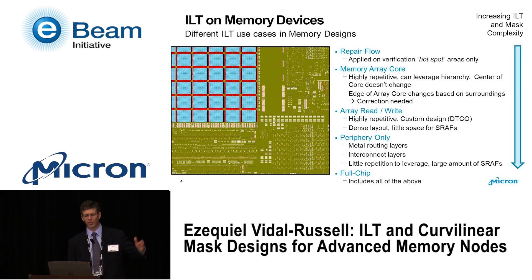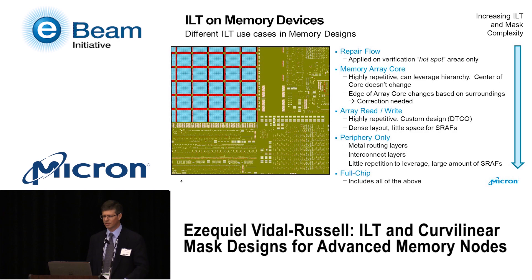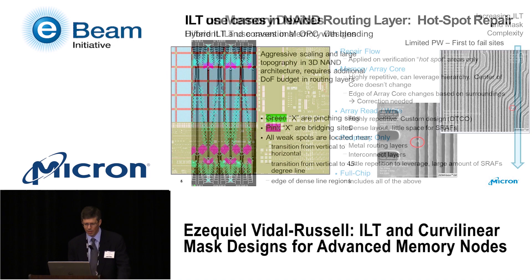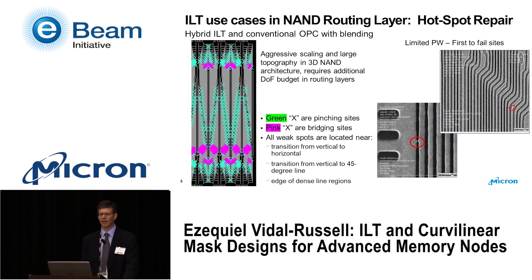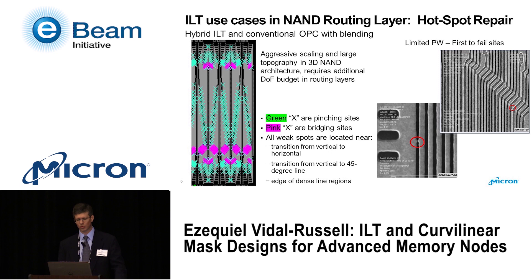If I were to rate these in complexity — both from a computational standpoint for ILT algorithms and from a mask complexity standpoint — this goes from top to bottom, with the top being the easiest and the bottom, full-chip ILT, being the most complex. Starting with the easier first introduction into ILT, I'd like to share this use case where for a 3D NAND architecture we use a flow called the hotspot repair flow — a hybrid ILT and conventional OPC solution with blending at the interfaces — to produce a solution with more process window than conventional OPC alone.